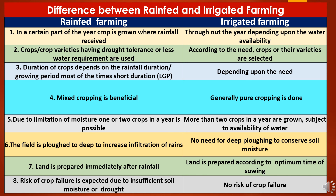Sixth, in rain-fed farming, the field is plowed deep to increase infiltration of rain, while in irrigated farming, there is no need for deep plowing to conserve soil moisture. Seventh, in rain-fed farming, land is prepared immediately after rainfall, while in irrigated farming, land is prepared according to optimum time of sowing. Eighth, in rain-fed farming, risk of crop failure is expected due to insufficient soil moisture or drought conditions, while in irrigated farming, there is no risk of crop failure.